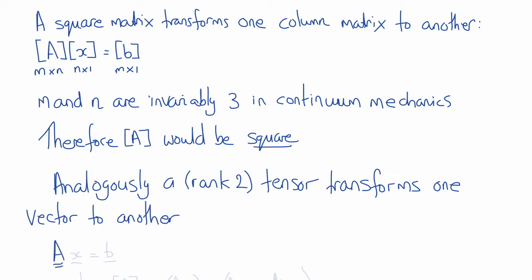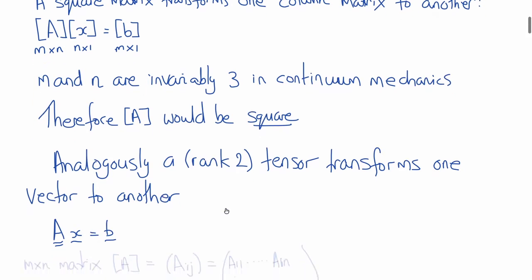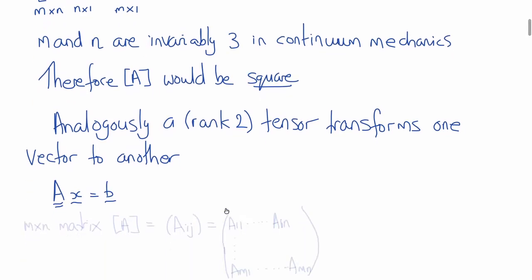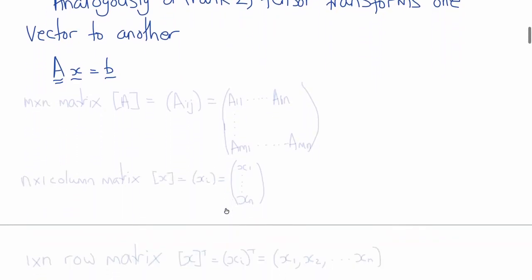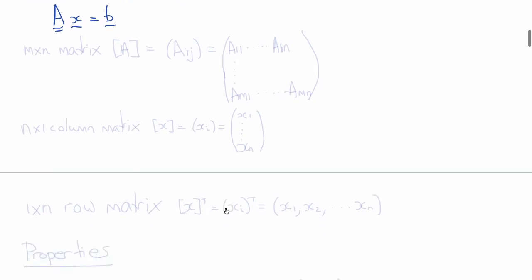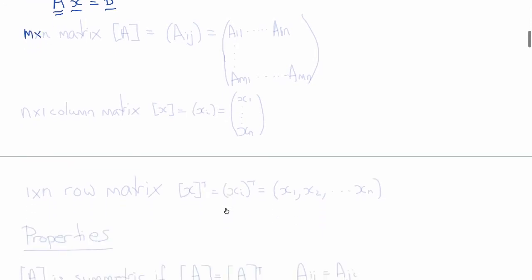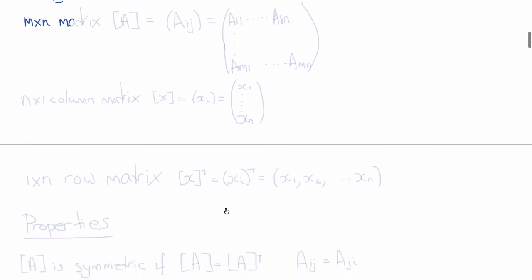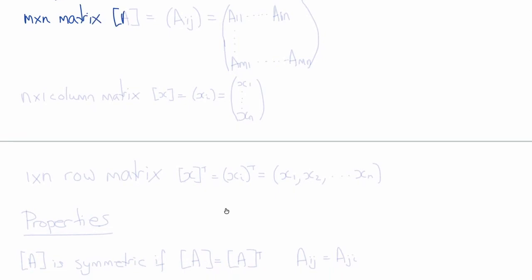This tells us that tensor A is the tensor that maps vector X to vector B, or that tensor A is defined by two vectors, X and B. Now let's review some matrix notations that you're already familiar with.